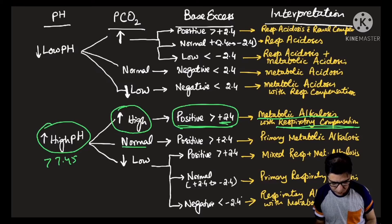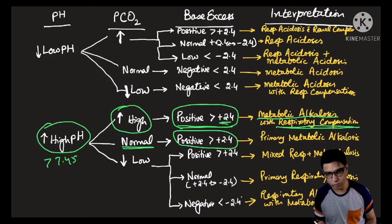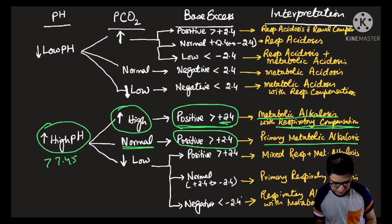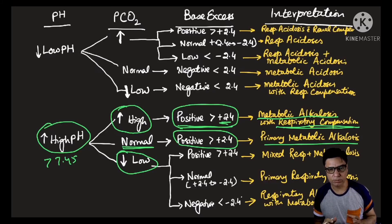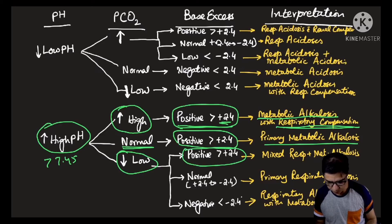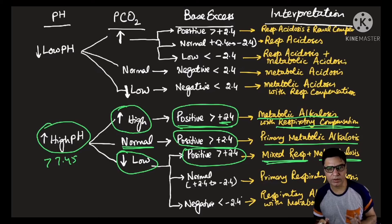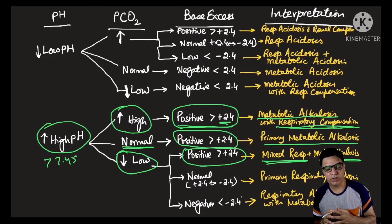With a high pH and normal pCO2, if the base excess is positive (greater than plus 2.4), you have primary uncompensated metabolic alkalosis. With a high pH and a low pCO2 — moving in opposite directions, indicating a respiratory primary problem — if the base excess is also greater than plus 2.4, you have a mixed respiratory plus metabolic alkalosis: a dual disorder where both the metabolic and respiratory systems contribute to the alkalosis.